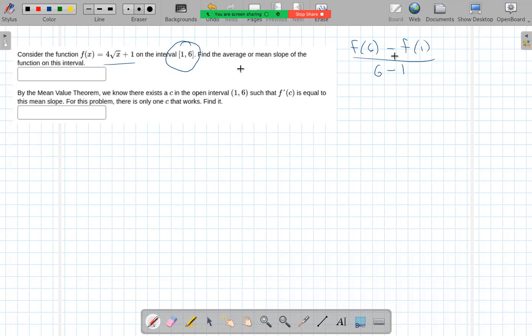So what do we get? f of 6 would be 4 square root of 6 plus 1, and then subtract parentheses 4 square root of 1 plus 1, all divided by 6 minus 1, or 5. So let's clean that up before we use a calculator. 4 square root of 1 plus 1, so that is 5.